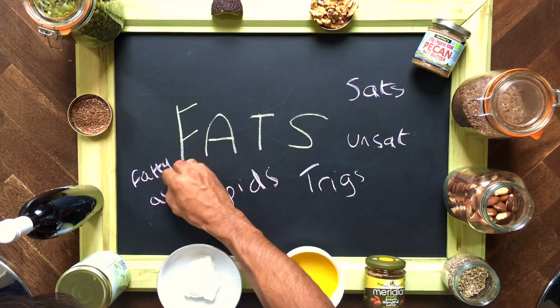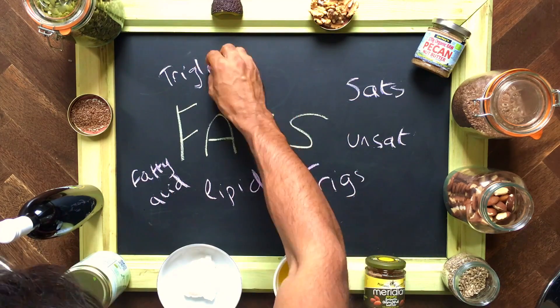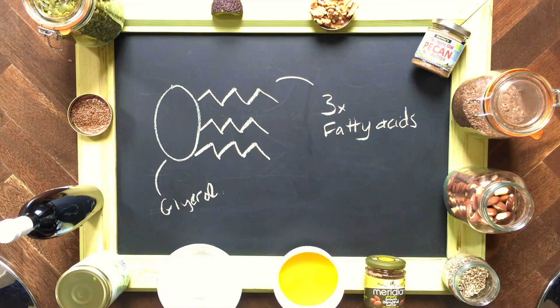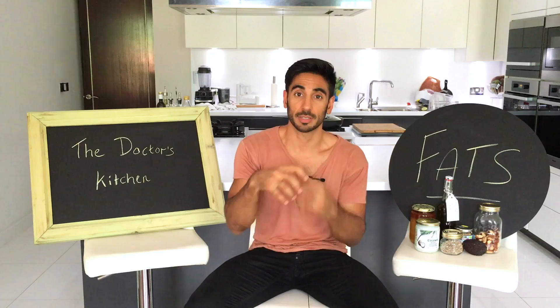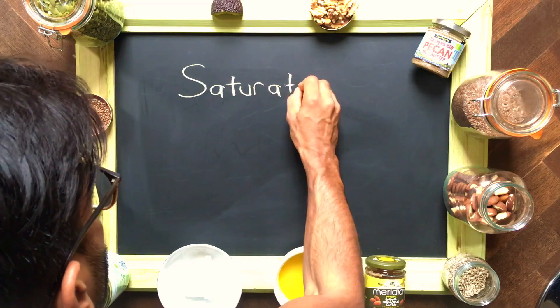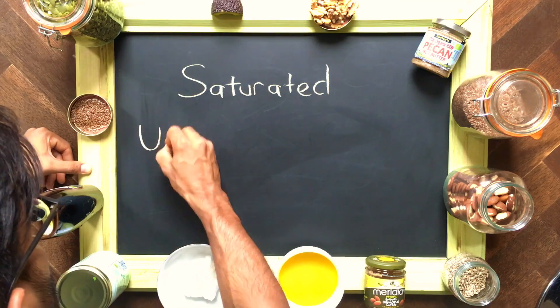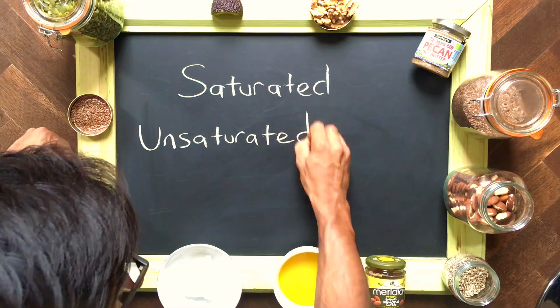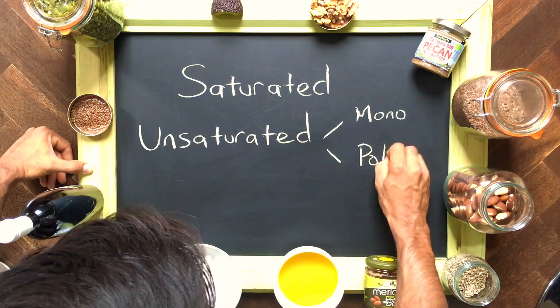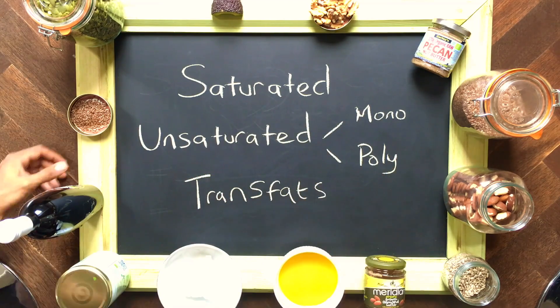Fats are called lots of different things: sats or unsats, fatty acids, trigs. Basically, fats are three fatty acid chains connected to a central group. There are four types we need to be aware of: saturated, unsaturated — which are divided into mono and polyunsaturated — and trans fats.